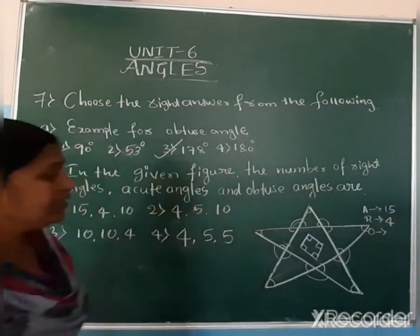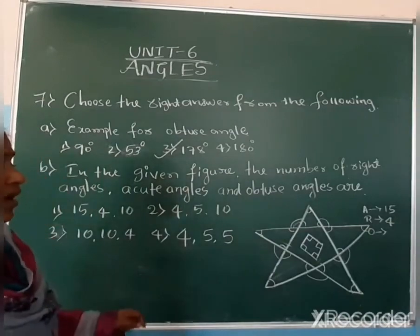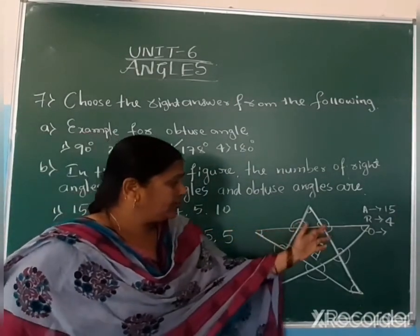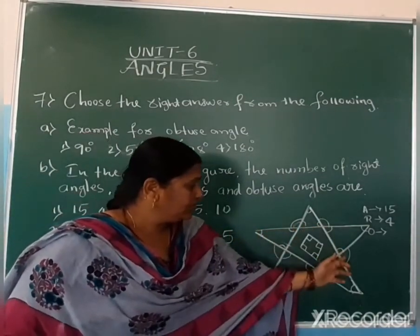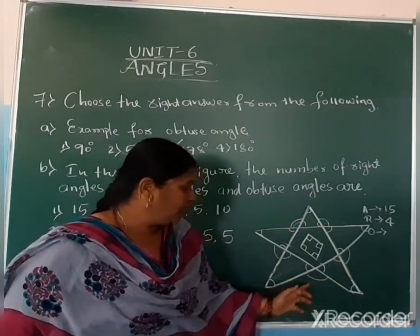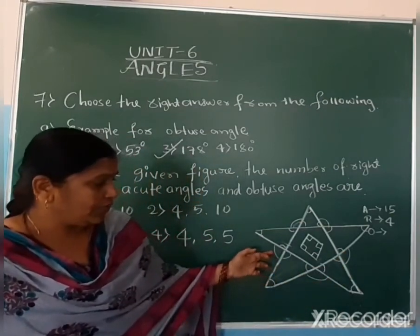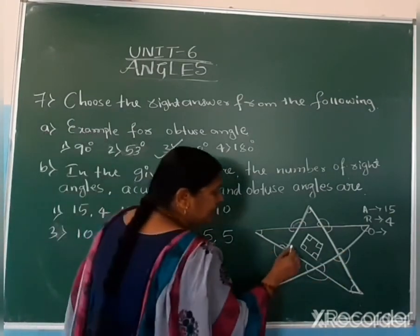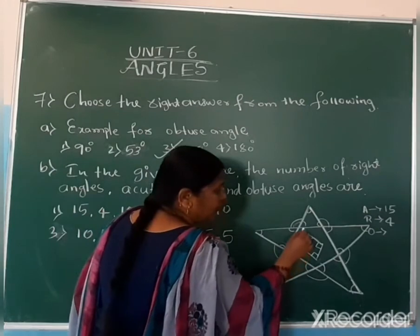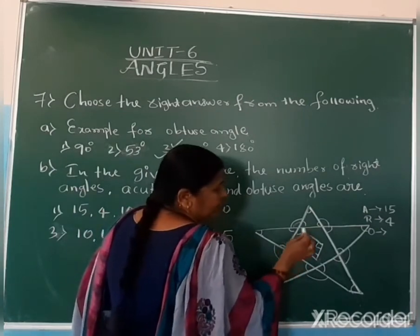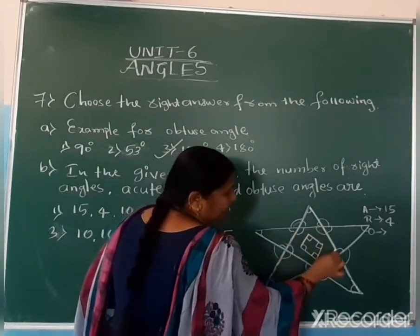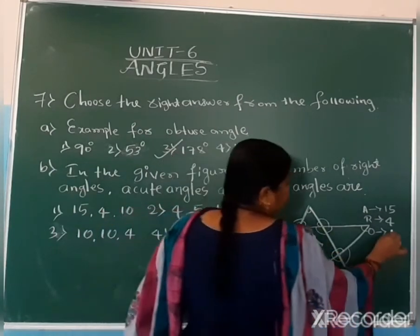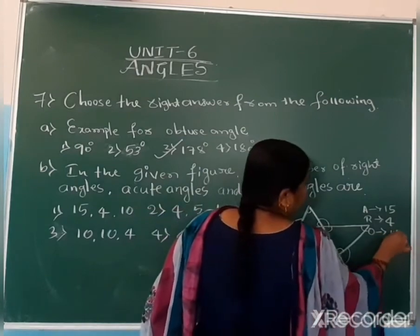Now find the obtuse angles: counting outside gives 1, 2, 3, 4, 5, and inside also 5 more — 6, 7, 8, 9, 10. Totally 10 obtuse angles.